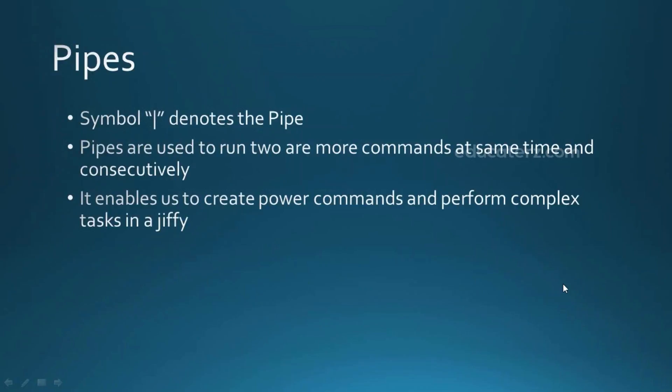Anyone new to UNIX or UNIX-like systems might wonder what role pipes play in running the operating system. They are not the real pipes you might have in mind. Whenever we want to execute two or more commands at the same time or run them consecutively, pipes help us. The vertical bar symbol on the screen represents the pipe. UNIX commands are powerful, and these pipes help us handle complex scenarios.